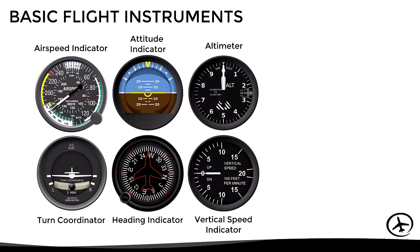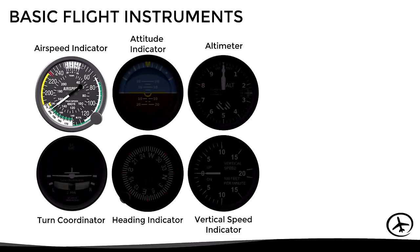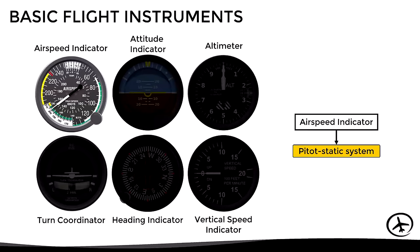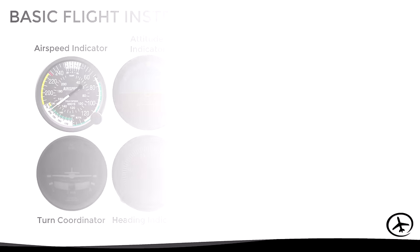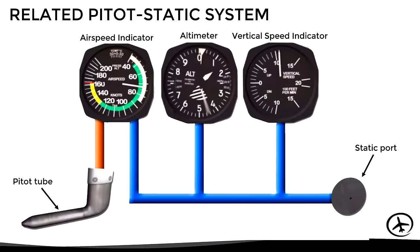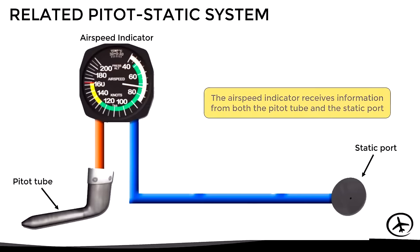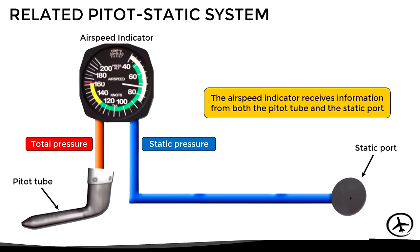In the next video or second part, we will see the color-coded markings of the indicator, how the instrument would react to a pitot tube blockage, as well as a static port blockage. The airspeed indicator is one of the six basic flight instruments and is linked to the pitot-static system, which means that its reading depends on the measurement of air pressure. Looking at the schematic, the airspeed indicator is the only instrument connected to both the pitot tube and the static port.